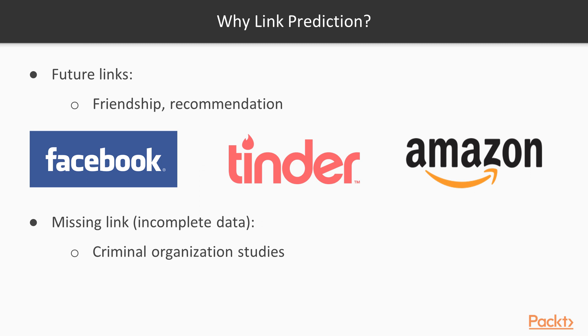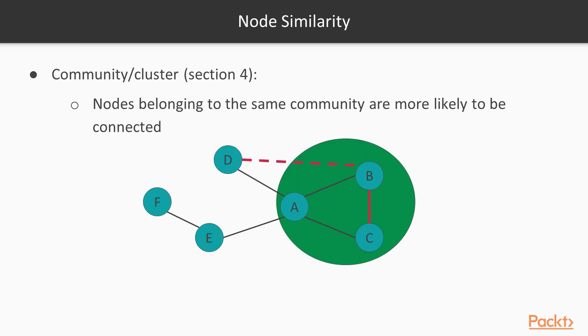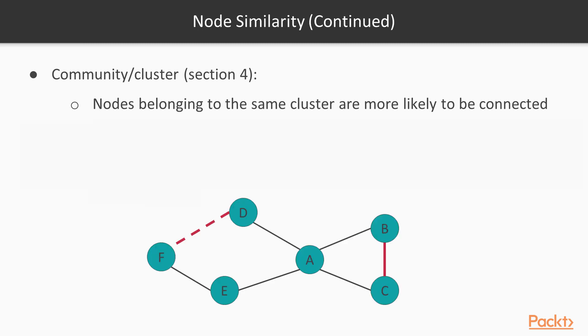There are a few techniques to assess node similarity and hence suggest new relationships. For instance, nodes belonging to the same community are more likely to be connected, now or in the future. That's why on this graph, the existence of a relationship between B and C who belong to the same community is more likely than a relationship between B and D because D is not inside the B community.